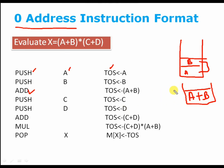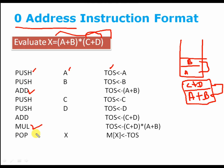A similar push and add operation is performed for C and D, and the result C plus D is stored at the top of the stack. Now we just have to perform a multiplication operation, which will multiply these two expressions and produce the final result. Then the pop operation is performed to store the result into memory of X.